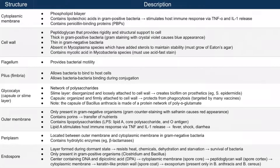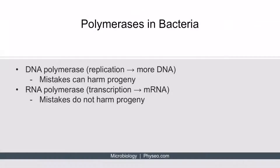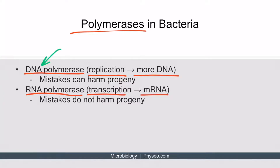Now we've covered everything in the table. There's just one item left to discuss: polymerases. Bacteria have DNA polymerases, which are used for replication — making more DNA. They also have RNA polymerases, used for transcription — to make mRNA. So DNA polymerases make more DNA, and RNA polymerases make more RNA.